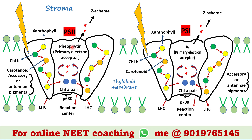Each of them contains a light harvesting complex, or LHC. Two such LHCs are found in each photosystem, and a reaction center is found between the two LHCs.